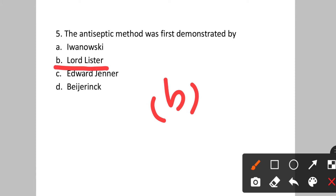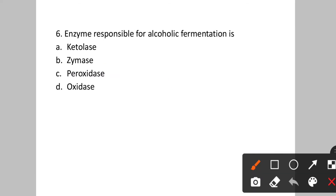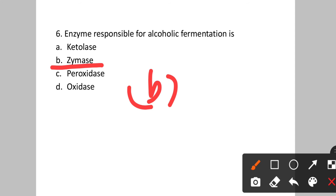Question number five: The antiseptic method was first demonstrated by? Option A: Ivanovski. B: Lord Lister. C: Edward Jenner. D: Beijerinck. Lord Lister first demonstrated the antiseptic method. Option B is the correct answer. Question number six: The enzyme responsible for alcoholic fermentation is? Option A: ketolase. B: zymase. C: peroxidase. D: oxidase. The enzyme responsible for alcoholic fermentation is zymase. Option B is the correct answer.